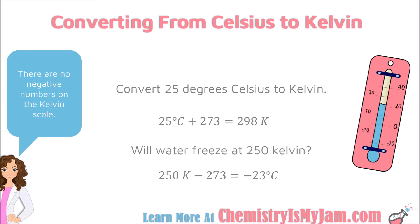For example, if you are asked to convert 25 degrees Celsius into Kelvin, you would take the 25 degrees, add 273, and find that it is 298 Kelvin. Or if you saw a question that asked whether water would freeze at 250 Kelvin, you could convert that to Celsius by subtracting 273: 250 minus 273 is negative 23 degrees Celsius. Water freezes at 0 degrees Celsius, so this water would freeze. Whenever you are working with temperature in gas law problems, you want to convert to Kelvin.